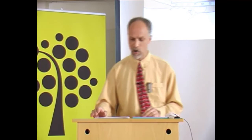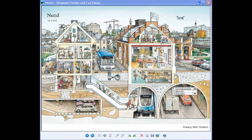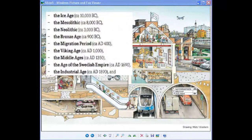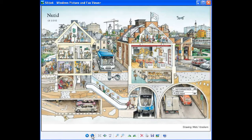This image will accompany us throughout this lecture. Venahem's work consists for the most part of ten large images, each stretching across one full double page. They depict snapshots of Swedish prehistory and history from the Ice Age to the present: the Ice Age, the Mesolithic, the Neolithic, the Bronze Age, the Migration period, the Viking Age, the Middle Ages, the Age of the Swedish Empire, the Industrial Age, and of course the present, which is this image. Each image shows the same place from the same vantage point, at different points in time, and the significant historical changes occurring between one image and the next.